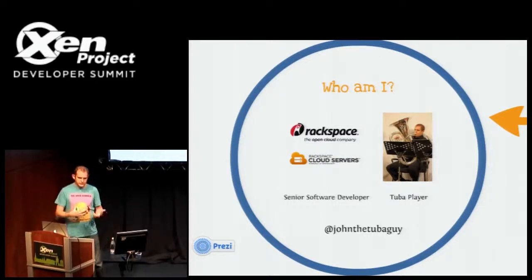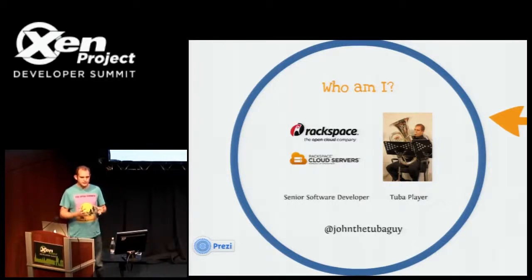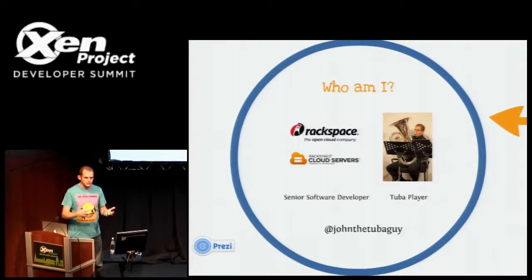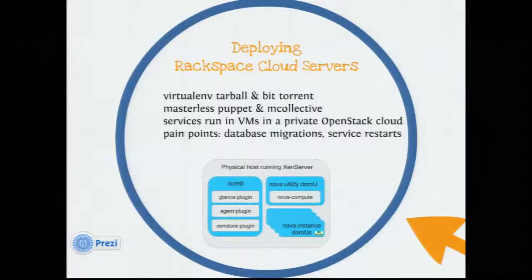The crux of this talk is to set the scene for the BOF later. We're going to discuss how we look at evolving the XenServer service upgrade and deploy, and the particular problems with contributing such code — but to set the scene, I want to talk about how we deploy OpenStack at Rackspace.